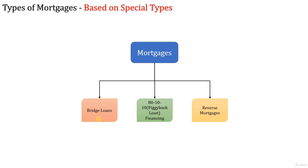The piggyback loan, or 80-10-10 financing, works as follows: when the mortgage amount is more than 80% of the purchase price, lenders require borrowers to take private mortgage insurance, PMI, on the extra amount, which can cost an additional half to 1% of the loan amount per year and is not tax deductible. With 80-10-10 financing, the borrower makes a 10% cash down payment, takes a first mortgage for 80% of the price, and a second mortgage for 10%. The interest rate on the second mortgage is about 2% higher than the going rate on the first, but this allows borrowers to save money spent on PMI.